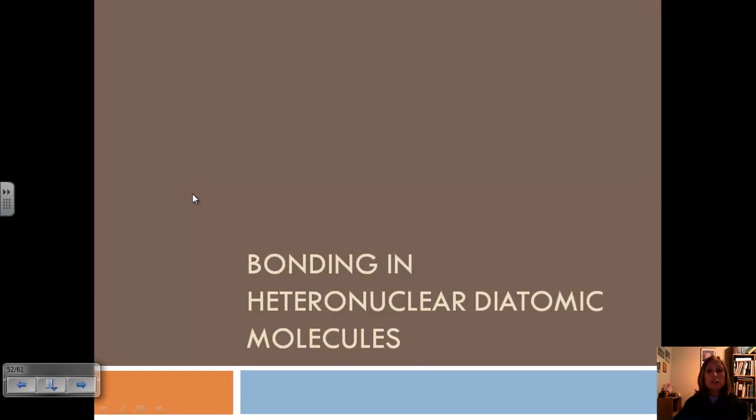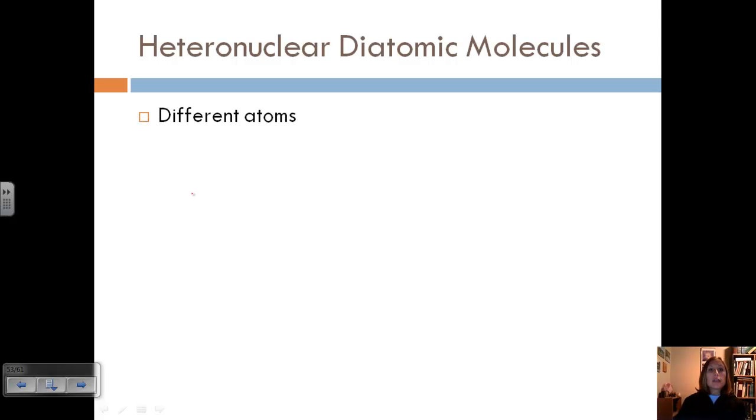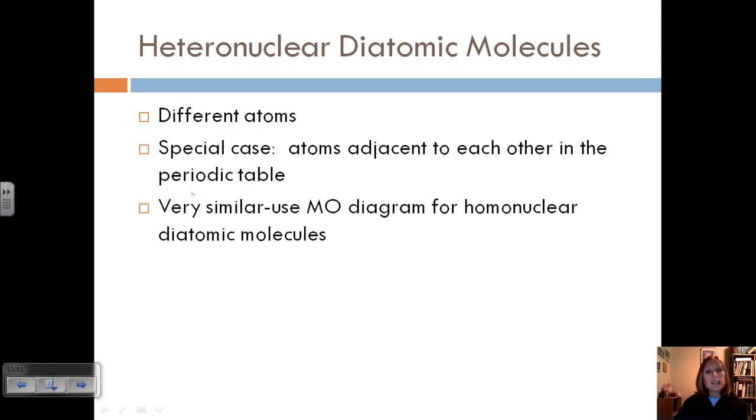So today we're going to finish our last section on covalent bonding, and we're going to talk about heteronuclear diatomic molecules and then put the localized electron model and the molecular orbital model together. Heteronuclear diatomic molecules are where we have different atoms, and a special case of this is when we have atoms that are adjacent to each other in the periodic table, so like nitrogen and oxygen or things that are right next to each other. Because these elements are so similar, we can use the molecular orbital diagram for homonuclear diatomic molecules and count it for the specific type of heteronuclear diatomic molecules.